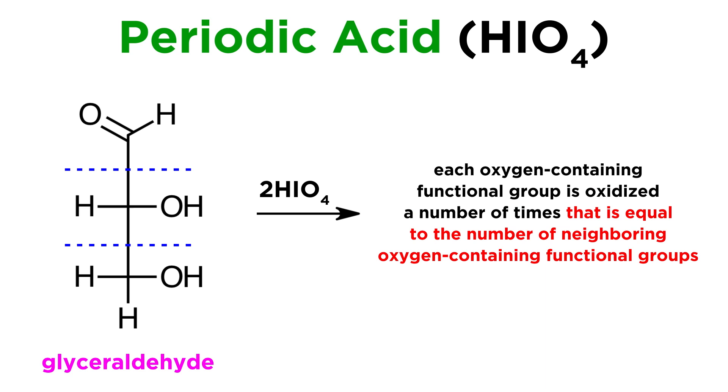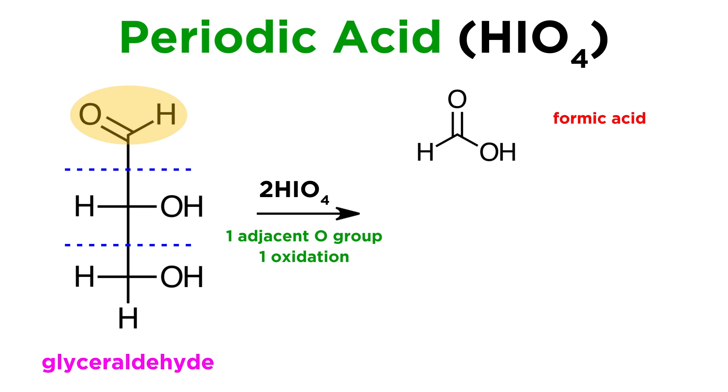So on top we have an aldehyde, and there is a hydroxyl next door, so it is oxidized once to give formic acid. Then there is an internal hydroxyl with one hydroxyl and one aldehyde on either side, so it is oxidized twice to give formic acid. And then we have a terminal hydroxyl with one hydroxyl next door, so it is oxidized once to give formaldehyde.